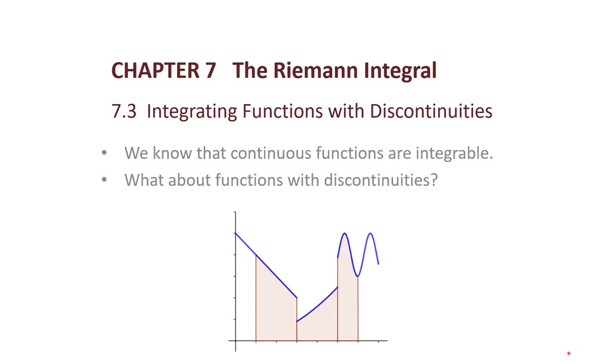Welcome back. We are continuing in Chapter 7, and today we look at 7.3, Integrating Functions with Discontinuities. Previously, we looked at 7.2, where we learned what it means for a function to be integrable. We know, in particular, that continuous functions are integrable. So let's look at functions that are not continuous. What about functions with discontinuities? Can they be integrable?